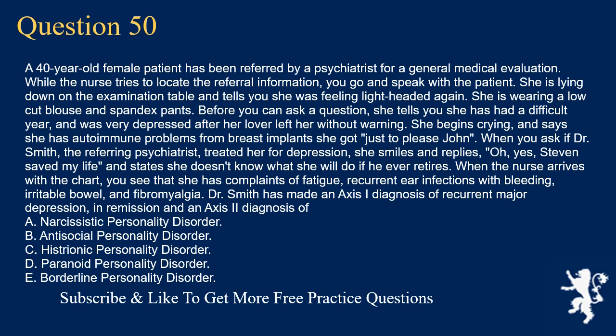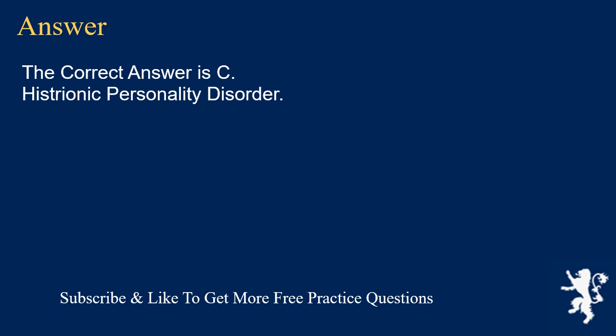Question 50. A 40-year-old female patient has been referred by a psychiatrist for a general medical evaluation. While the nurse tries to locate the referral information, you go and speak with the patient. She is lying down on the examination table and tells you she was feeling lightheaded again. She is wearing a low-cut blouse and spandex pants. Before you can ask a question, she tells you she has had a difficult year, and was very depressed after her lover left her without warning. She begins crying, and says she has autoimmune problems from breast implants she got just to please John. When you ask if Dr. Smith, the referring psychiatrist, treated her for depression, she smiles and replies, 'Oh yes, Stephen saved my life,' and states she doesn't know what she will do if he ever retires. When the nurse arrives with the chart, you see that she has complaints of fatigue, recurrent ear infections with bleeding, irritable bowel, and fibromyalgia. Dr. Smith has made an Axis I diagnosis of recurrent major depression in remission and an Axis II diagnosis of: A. Narcissistic personality disorder. B. Antisocial personality disorder. C. Histrionic personality disorder. D. Paranoid personality disorder. E. Borderline personality disorder. The correct answer is C. Histrionic personality disorder.